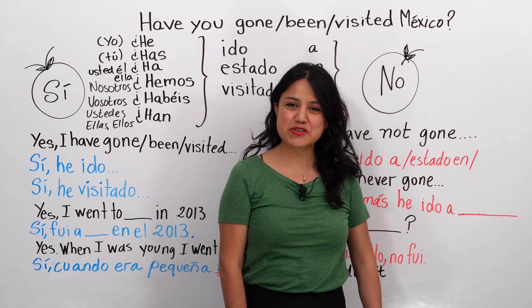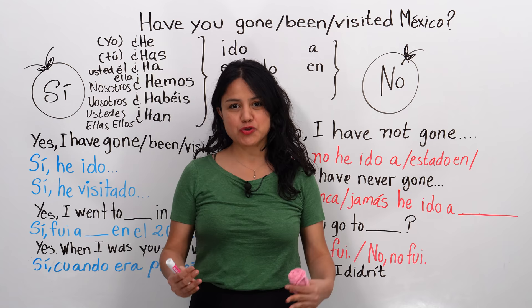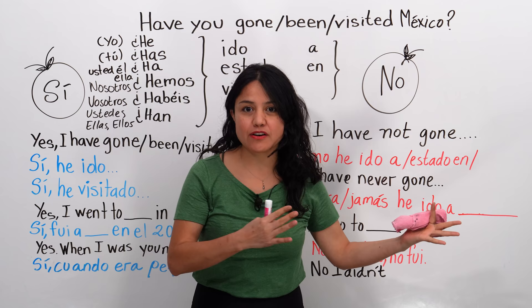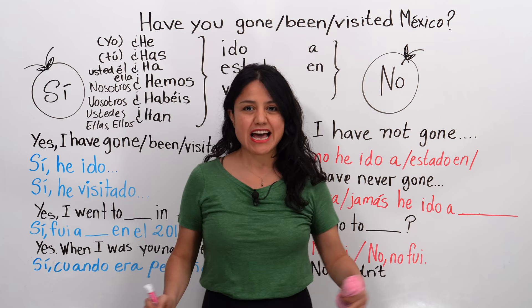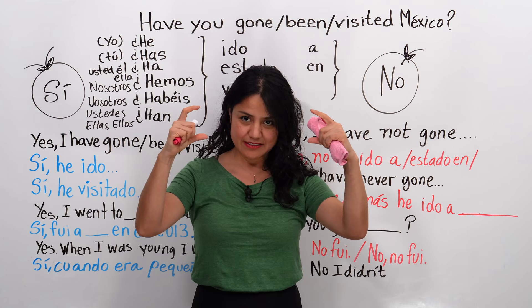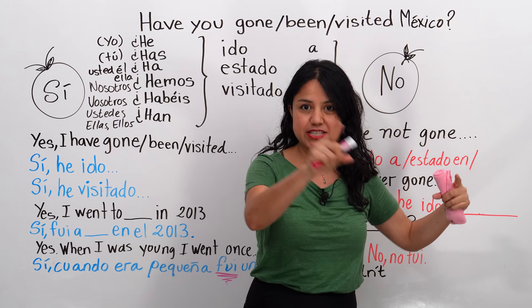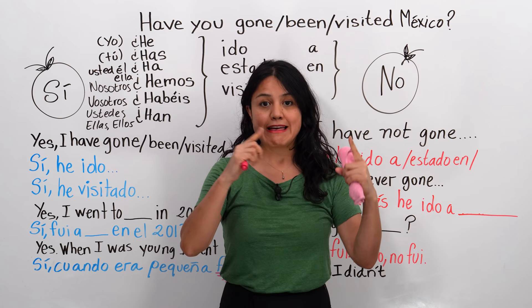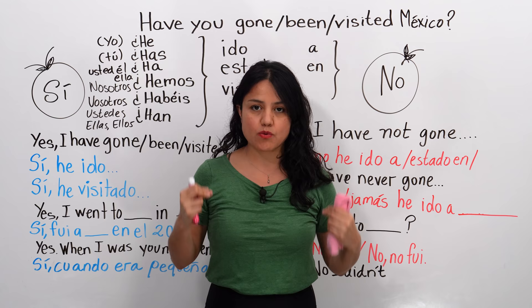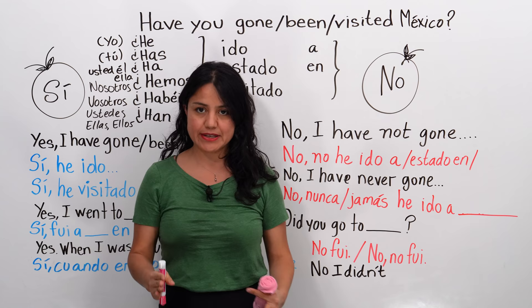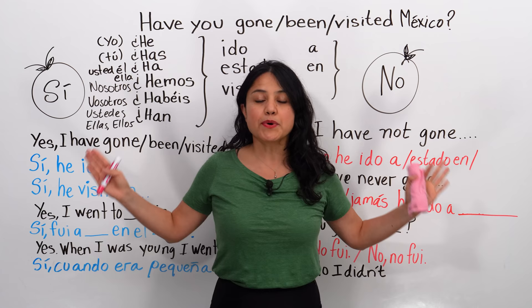En la clase de hoy, we're going to learn how to correctly answer the question: Have you been in Mexico? Have you gone to Mexico? Have you been in Paris? Have you gone to Paris? Have you visited Alaska? That structure — have you gone, have you been, have you visited — have you + verb in past participle. You should watch my video about past participles. I'm going to teach you how to correctly answer the question, because it is very important. Depending on your answer, yes or no, we will have different choices, different ways to answer.